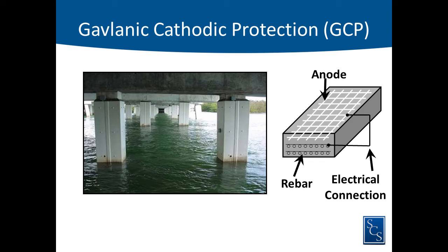You have to measure the level of protection achieved. Current flows from the anode through the concrete to the steel to protect it. Galvanic is very similar except there's no power supply. When finished, that's typically what it looks like when you put the jacket with an anode inside. Many owners simply jacket without galvanic or impressed current CP. The question is: when do you use a regular jacket versus a CP jacket? In a severe environment like this, using a regular jacket is not a good idea — it's not going to last very long, and the corrosion will continue. When you remove the jacket, you will have lost all your steel.